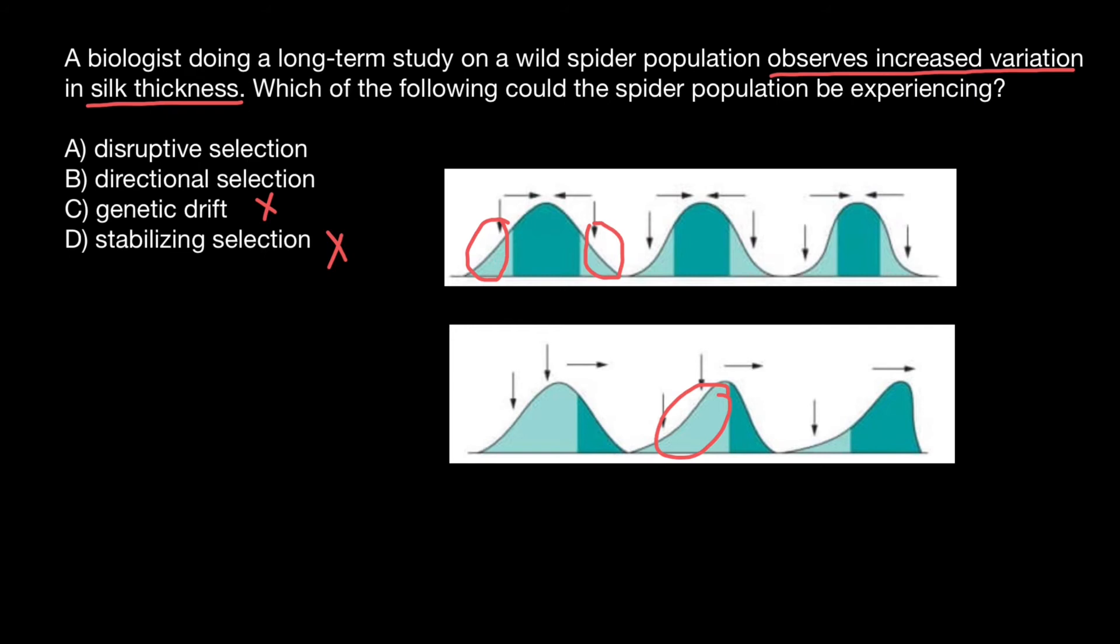And next, directional selection. Actually, we are going to see the same picture as in genetic drift. The only difference between genetic drift and directional selection is that genetic drift usually happens due to, for example, migration, or some selection pressure on the population which is natural.